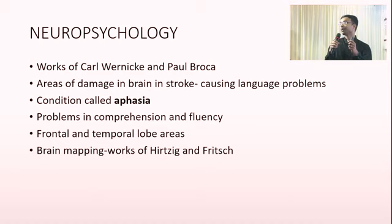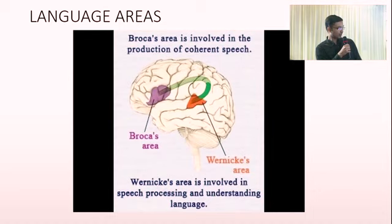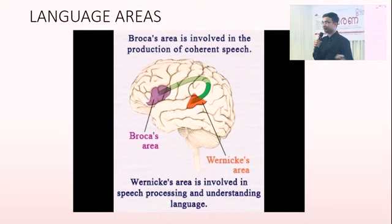Wernicke and Broca identified certain parts of the brain that control our language, and when these parts are affected, we have a condition called aphasia — an inability to speak. Broca's area deals with the speaking of language and Wernicke's area deals with the understanding. So if you don't have understanding and don't have production, you cannot have speech. These are the pioneers of cognitive neurology.